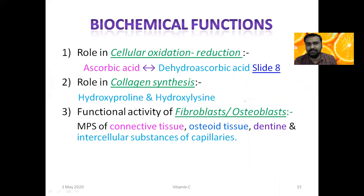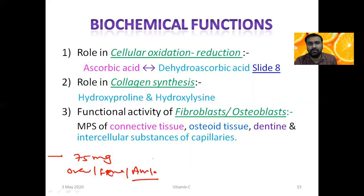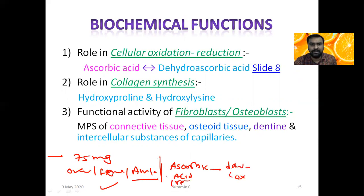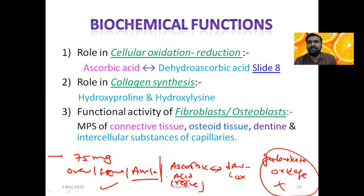Now for the functions of Vitamin C: the first biochemical function is mediation of oxidation-reduction reactions. We have already seen that ascorbic acid is the reduced form and dehydroascorbic acid is the oxidized form — this interconversion allows Vitamin C to participate in redox reactions.